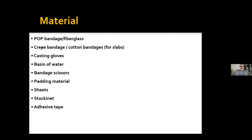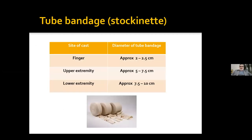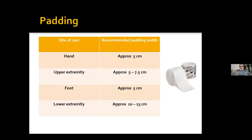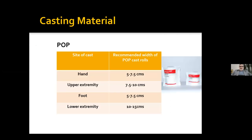We need a few things while applying a plaster cast: POP bandage, fiberglass, crepe bandage, cotton bandages, casting gloves, basin of water, bandage scissors, padding material, sheets, stockinette, adhesive tape. Stockinette comes in different sizes: 1 inch for finger, 2-3 inches for upper extremity, 3-4 inches for lower extremity. Padding sizes: 2 inches for hand and feet, 2-3 inches for upper extremity, 4-6 inches for lower extremity. Synthetic cast sizes: 2-3 inches for hand and feet, 3-4 inches for upper extremity, 4-5 inches for lower extremity.